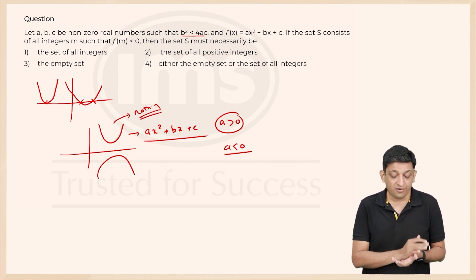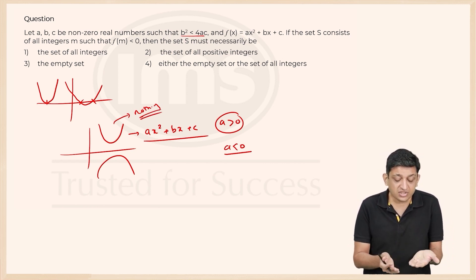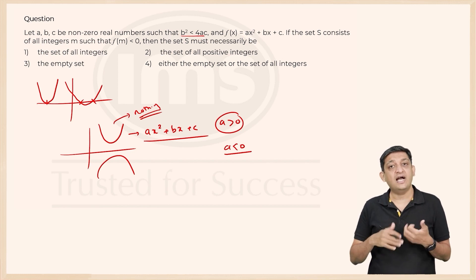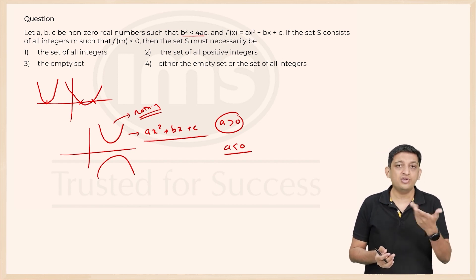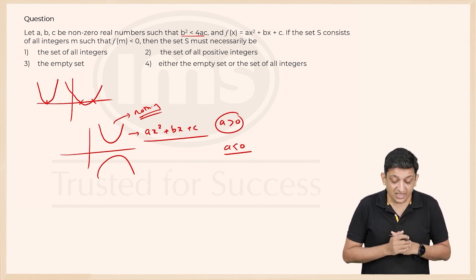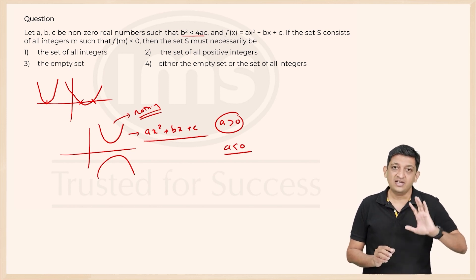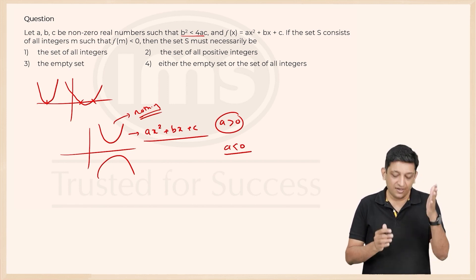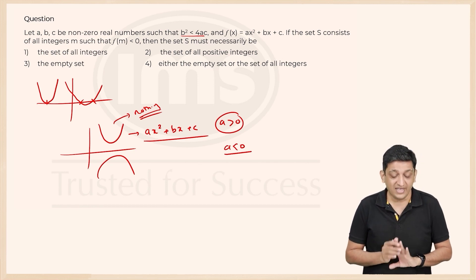There will be no value for which f(m) will be less than 0. Why? Because it does not go below the x-axis at all. So whatever values you put, you are going to get a positive solution. So in this case, we are going to say that there are no values of m for which f(m) will be less than 0.